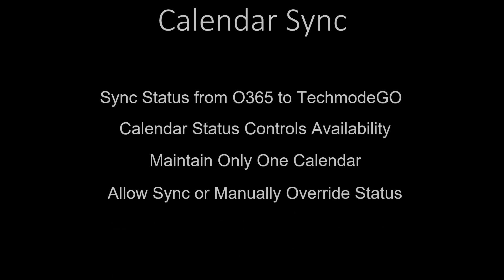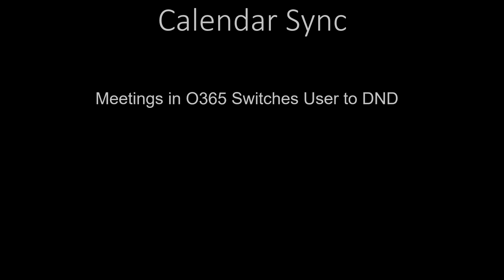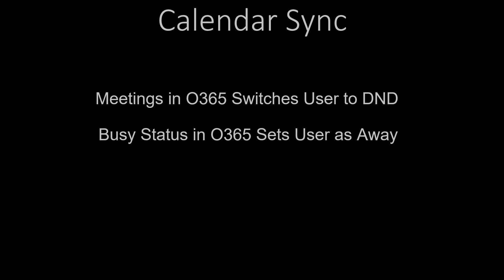System admins can also create custom profiles for anyone in the business to use — for example, a business trip or company-wide holiday — to override calendar events. If the business trip profile is selected by the user or the administrator, it would change the calendar to away on a business trip and all other calendar entries would be ignored. A calendar entry for busy or working elsewhere in O365 sets the user in TechnoGo to do not disturb and would not allow calls or messages to that user. An out of office or away from my desk message in O365 would set the user to away in the phone system and still allow calls and messages.